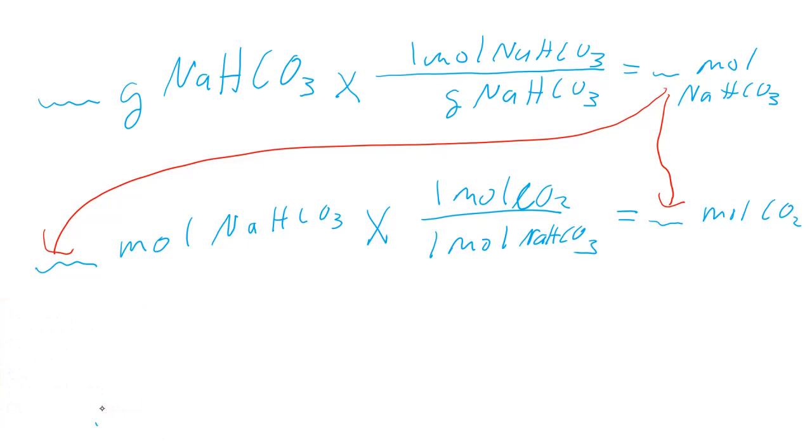Then we need our theoretical yield of carbon dioxide in grams. We're going to take our moles of carbon dioxide, and you'll need to calculate the molar mass of carbon dioxide. For every one mole of carbon dioxide, we need to know how many grams of carbon dioxide. That's where you'll plug in your molar mass, and this will give you the grams of carbon dioxide.